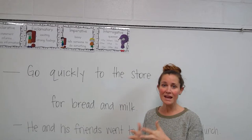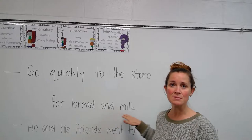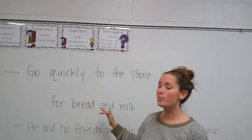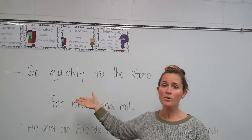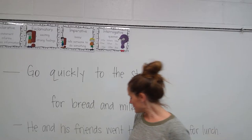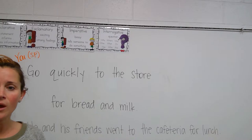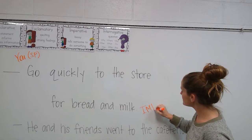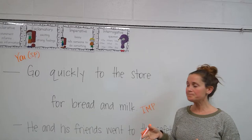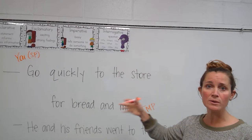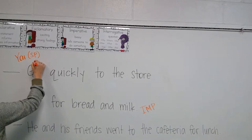The first sentence in Exercise 1 is: 'Go quickly to the store for bread and milk.' The first thing we ask is who should go quickly to the store for bread and milk. If we don't see a subject in our sentence, we know we have a subject, but it is the understood 'you' — the subject pronoun. We know this is going to be an imperative sentence. What is being said about you? What is the verb? We find that we should go, so 'go' is our verb.